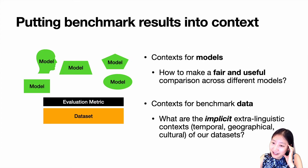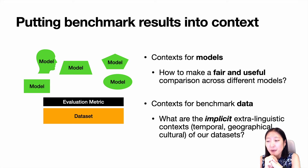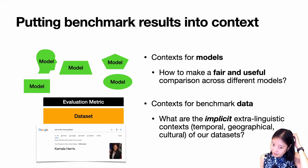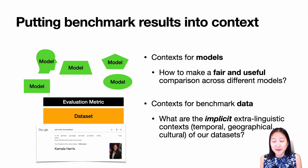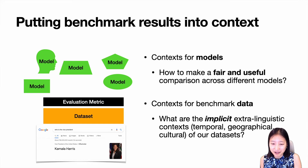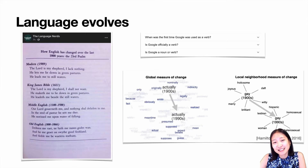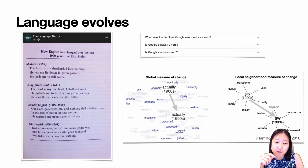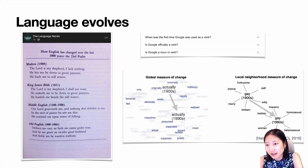Moving on to the second part: context for the benchmark data themselves. What are the implicit extra-linguistic context assumptions of our datasets, and how can we quantify them? The example of who is the vice president with Kamala Harris as the answer assumes the dataset describes the world in 2021 and geographically the United States. Language evolves — from old English to the 1600s to modern English, we see significant change. New words emerge, and even existing words change meaning over time. When was the first time Google was used as a verb?